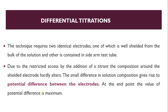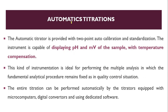The next type of titration is differential titration. In this technique, two identical electrodes are required — one of which is well shielded from the bulk of solution, and the other is contained inside an arm like a test tube. This small difference in solution composition will produce a difference in potential between the electrodes, and the point at which our potential difference will be maximum is our end point. This is known as differential titration.